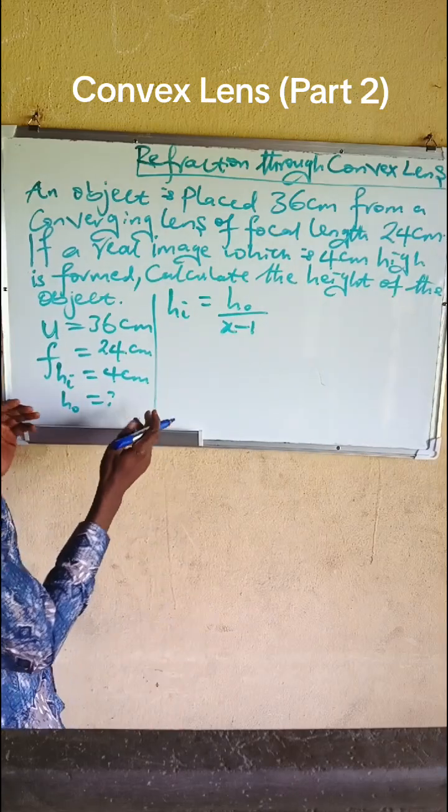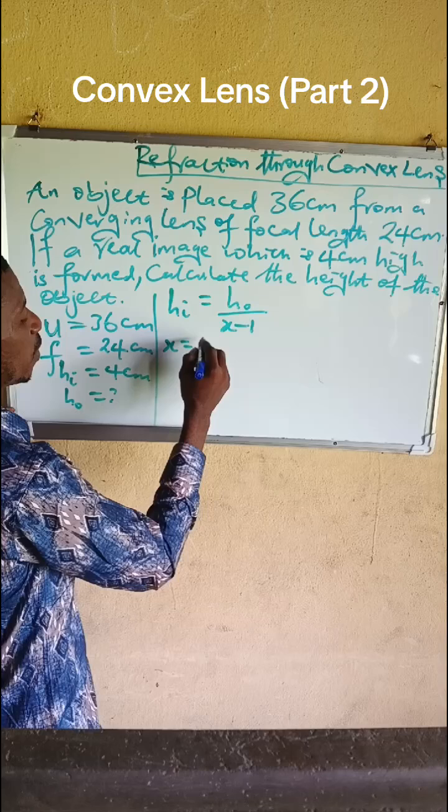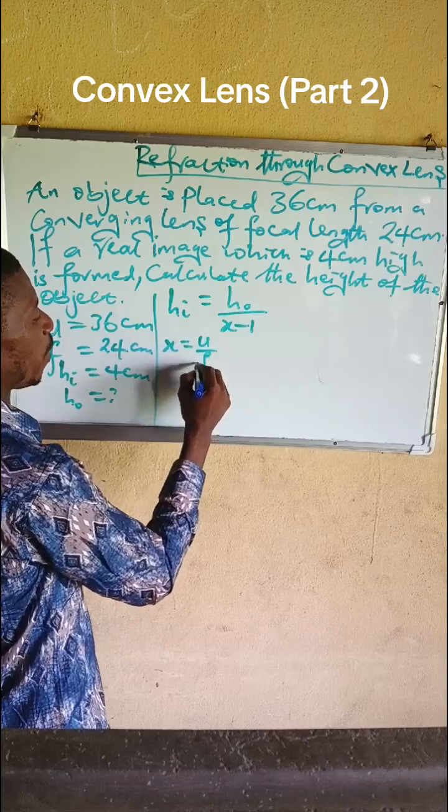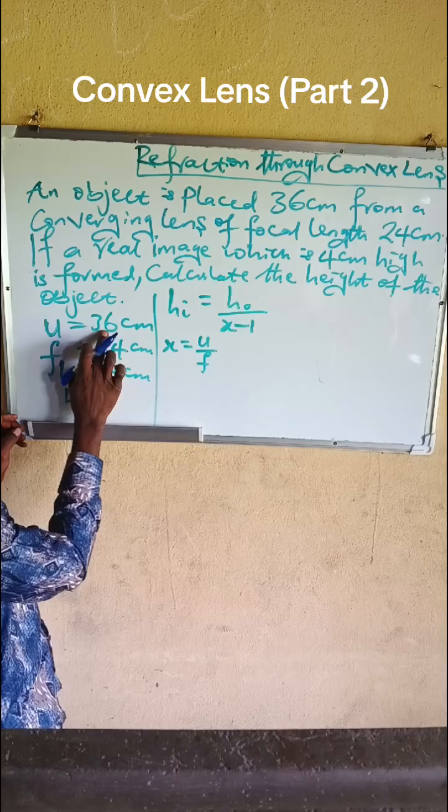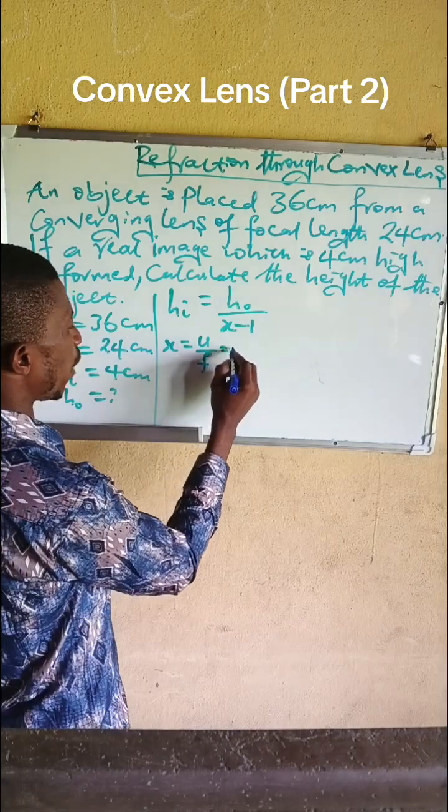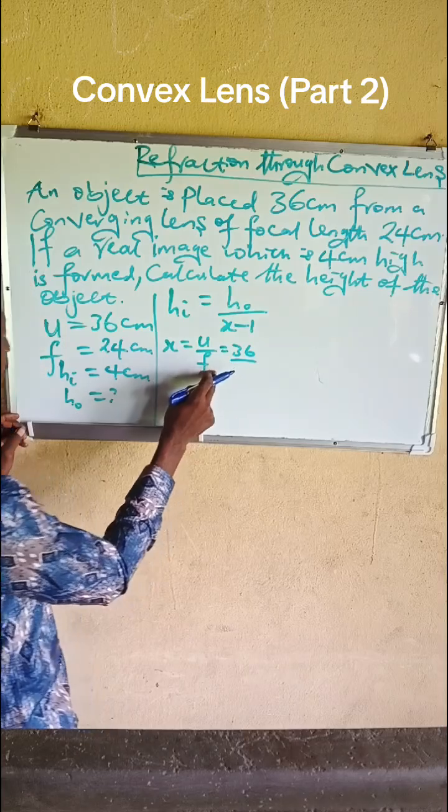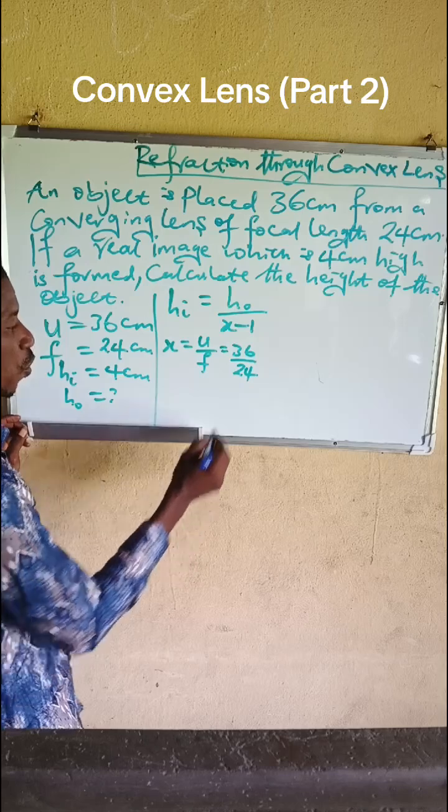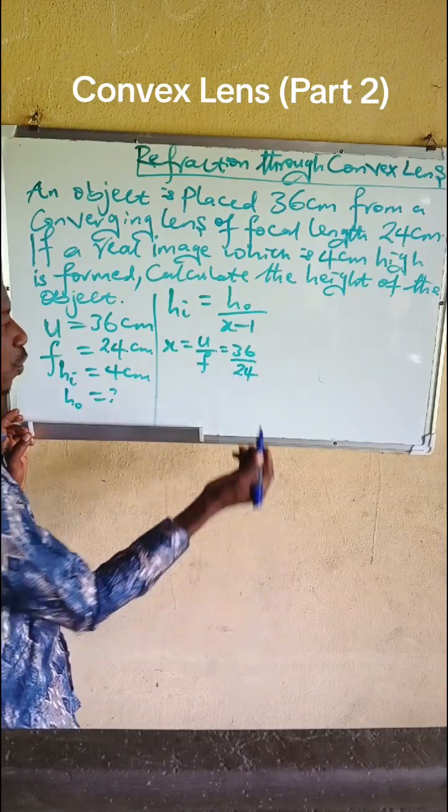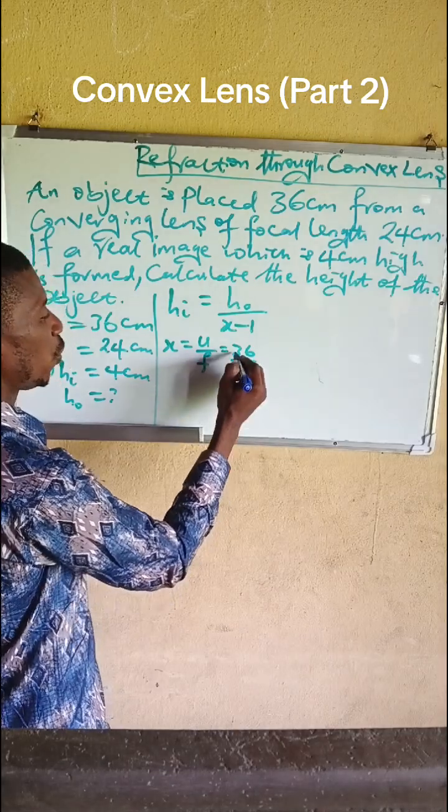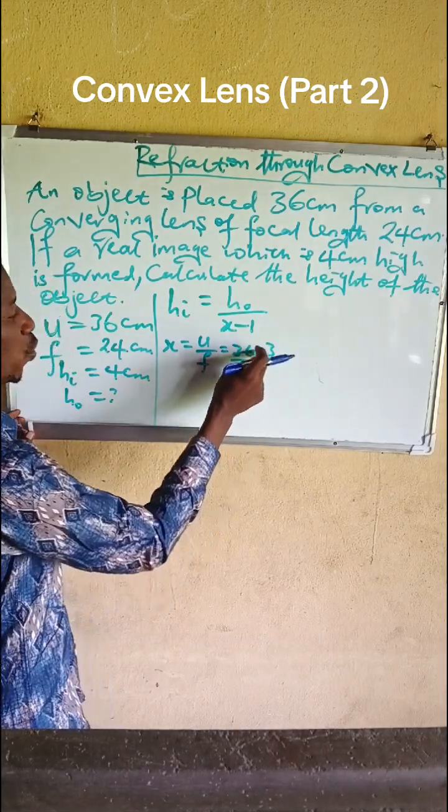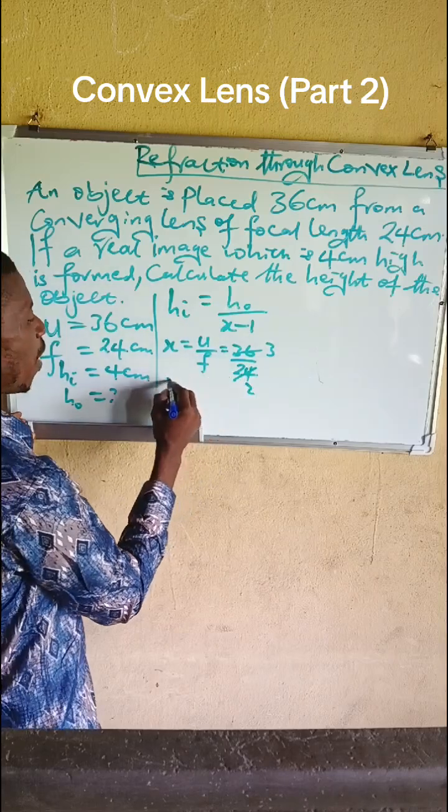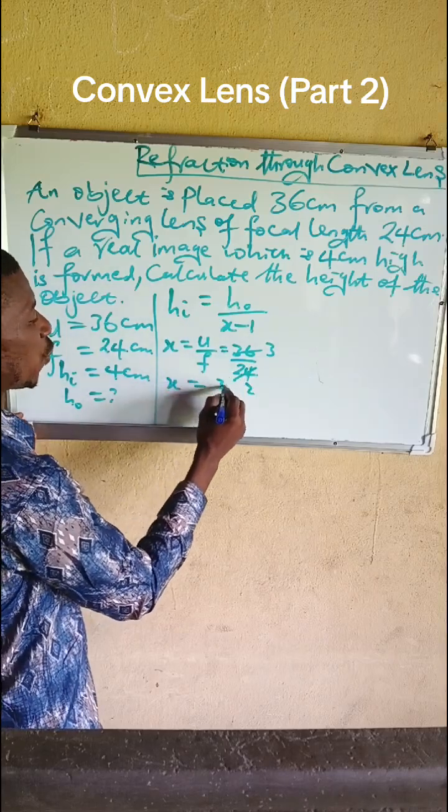Where x is given by u over f, and u is 36, so you have 36 over f which is 24. Dividing both by 12 gives us 3 over 2, so x becomes 3/2.